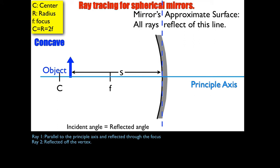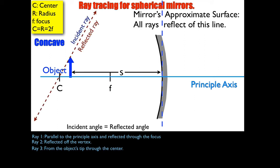The third ray draws from the object's tip through the center. The assumption here is that this concave mirror is part of a sphere, so the object is actually inside the imaginary sphere. The light ray goes from the tip of the arrow through the center — if the sphere were real, it would bounce back and forth through the center, but it's not real. Here's the third ray: from the tip through the center. Draw it long on both sides.